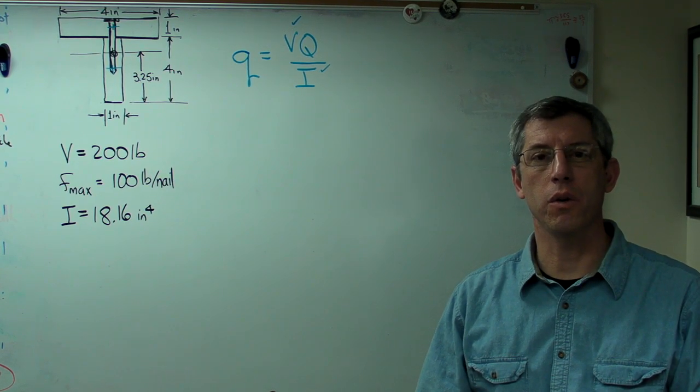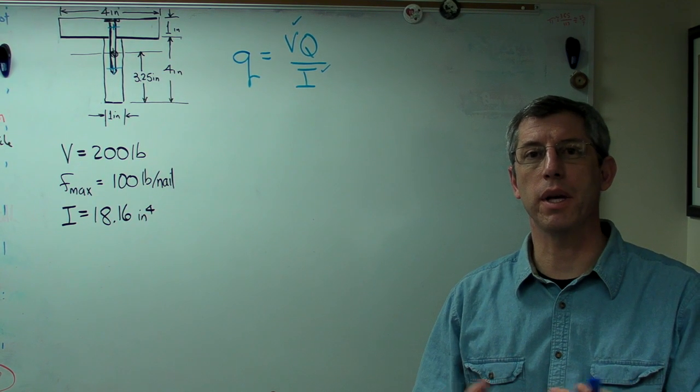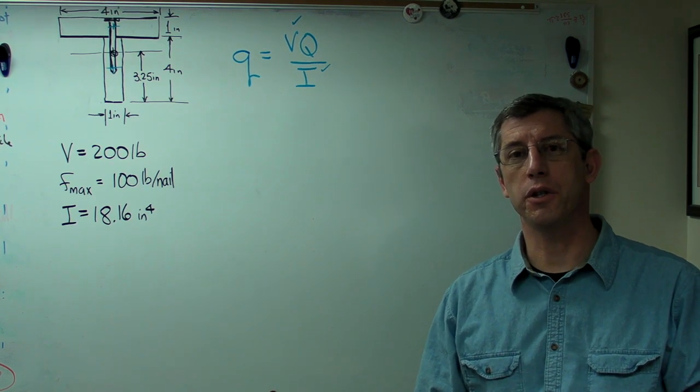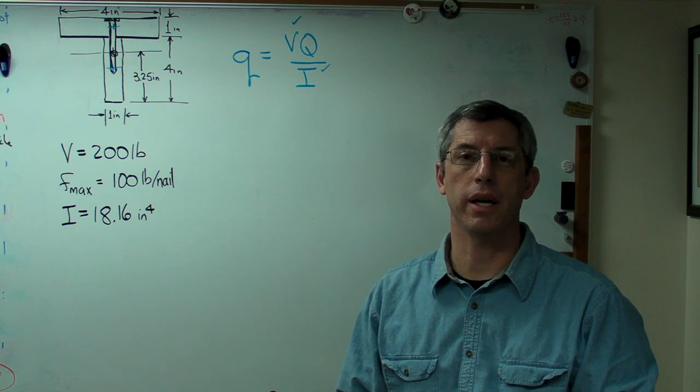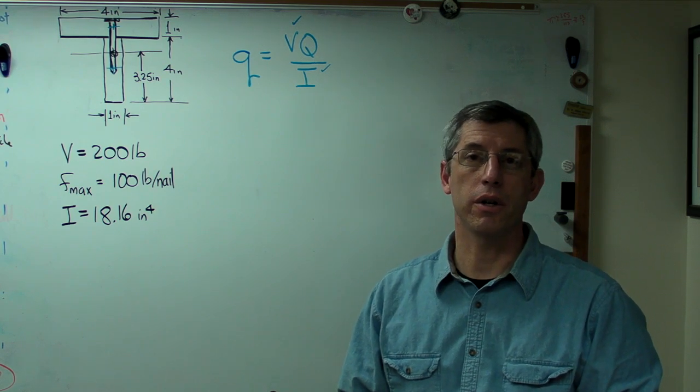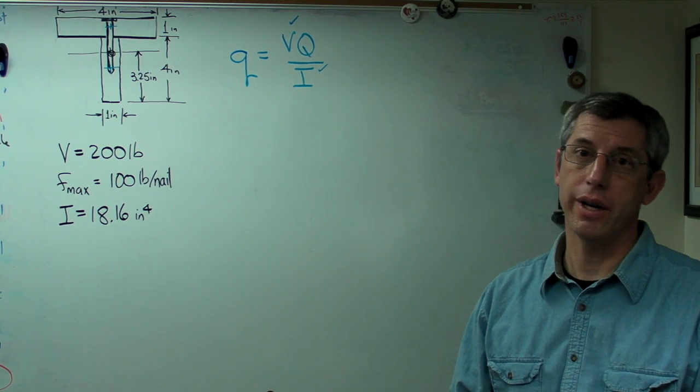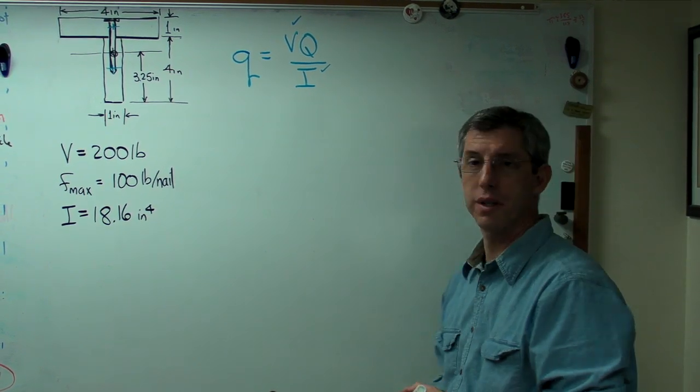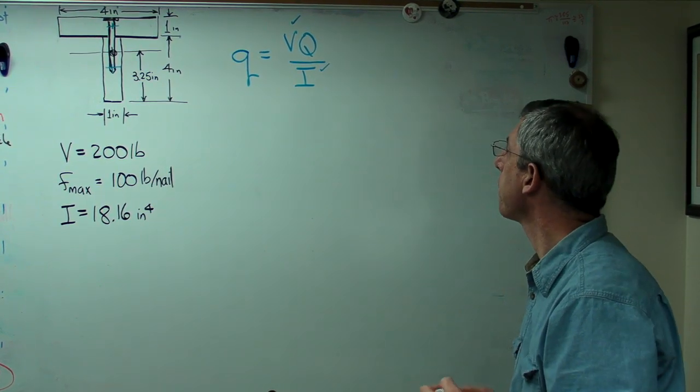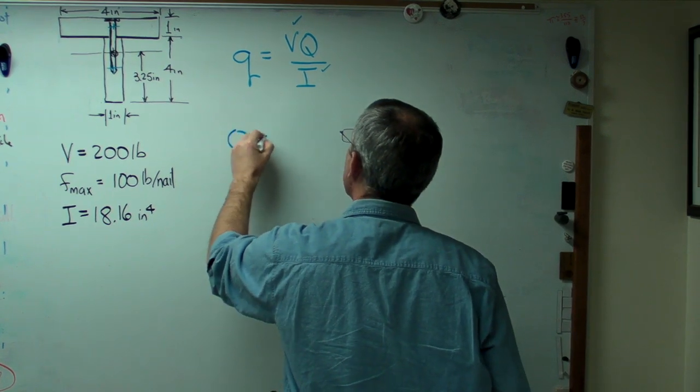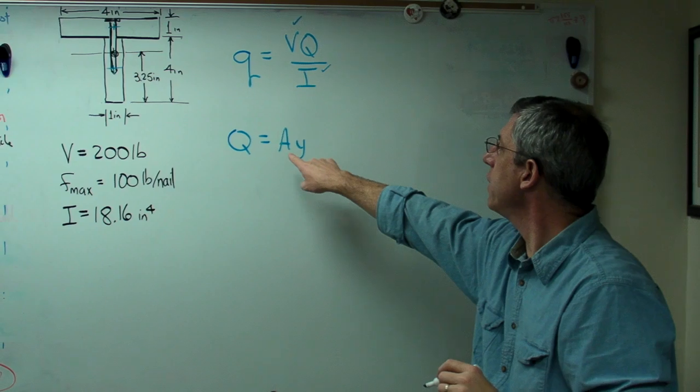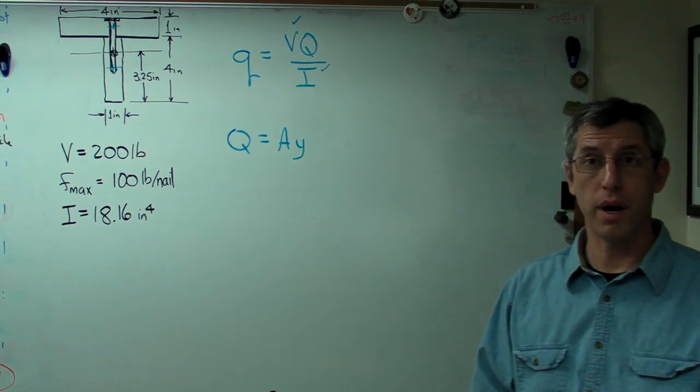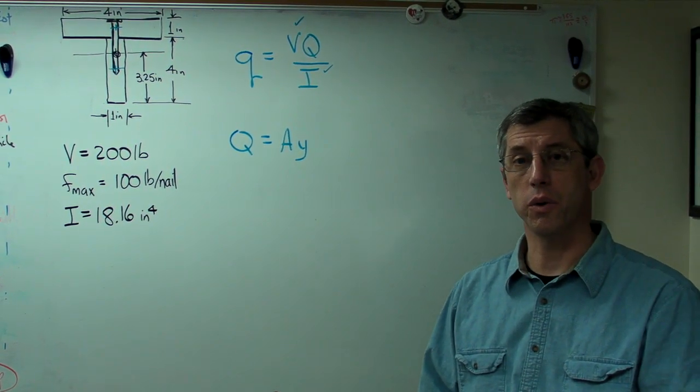Then you've already worked with something along in this family when you figured out area moment of inertia, because there is an area times a distance squared term in that calculation. And that's often called the second moment of inertia. There actually is a third moment of inertia, but it's not something we use in this class. So let's figure out Q. Q is just an area times a distance. And there's one of these A's and one of these Y's for every box that makes up the section we're interested in.